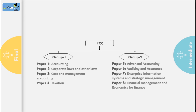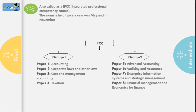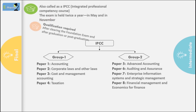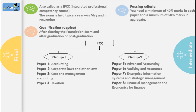The second level is the Intermediate level, also known as IPCC. Exams are held in May and November. At the IPCC level, there are two groups — Group 1 and Group 2 — each with 4 subjects. You can give both groups together or one at a time. To be eligible for this exam, you need to have cleared the Foundation exam. If you are a graduate or post-graduate and want to do CA, you can directly apply for IPCC, but you need to complete a 9-month articleship under a CA first. Passing criteria is the same: minimum 40% in each subject and 50% aggregate.